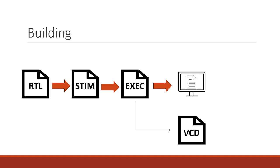Or, we can have the executable print out a value change dump file, and this can actually be created with just one simple system task — I'll show you how to do it later. This is a popular dump format for Verilog simulators. It contains the information necessary to visually display hierarchical information, signal values, and signal waveforms. And we'll see that later.